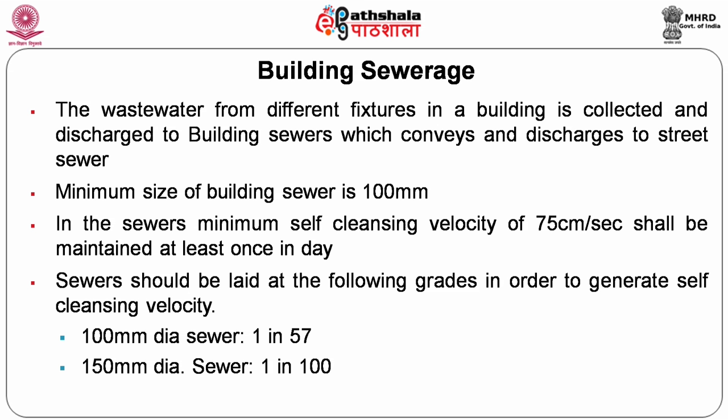The sewer should be laid at a specified slope to generate self-cleansing velocity. For a 100 mm diameter sewer, it should be laid at 1 in 57 — a fall of 1 cm for every 57 cm. For a 150 mm diameter sewer, it should be 1 in 100 — 1 cm fall for every 100 cm. This ensures self-cleansing velocity and prevents settling of solids, which can accumulate and cause backflow and overflow through manholes.